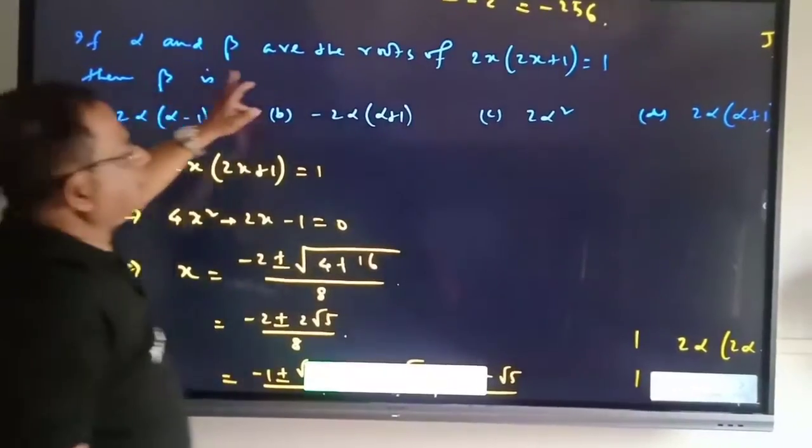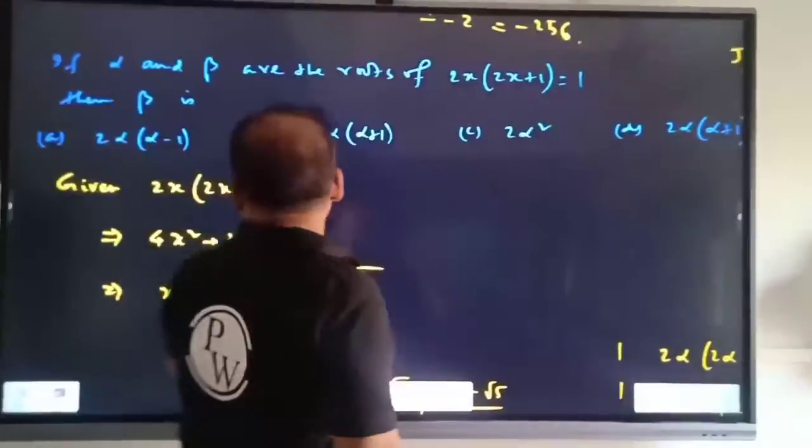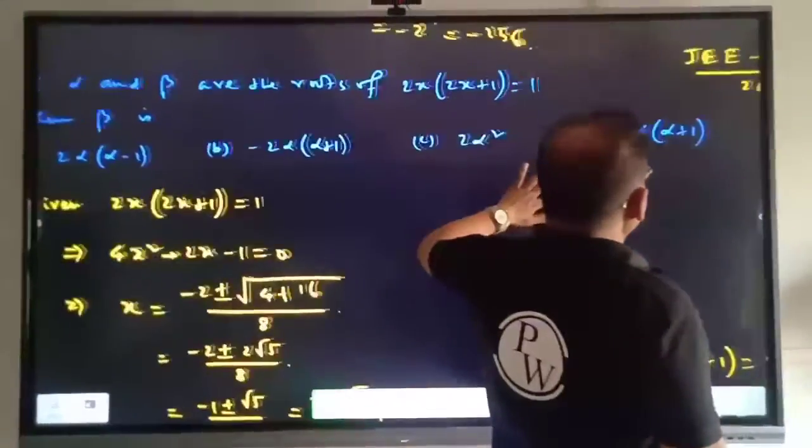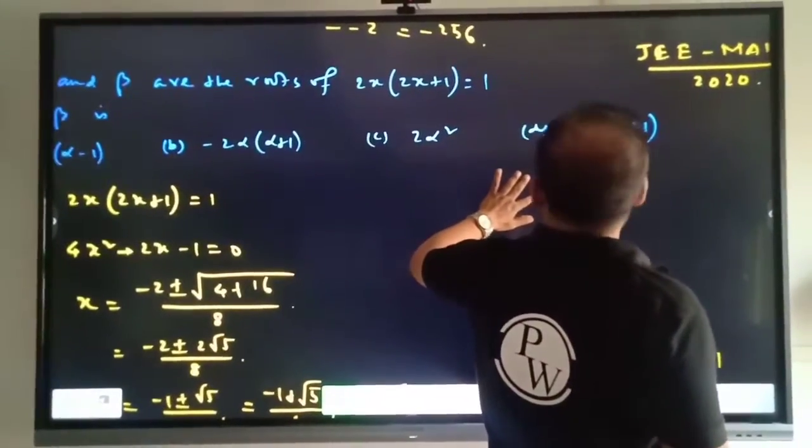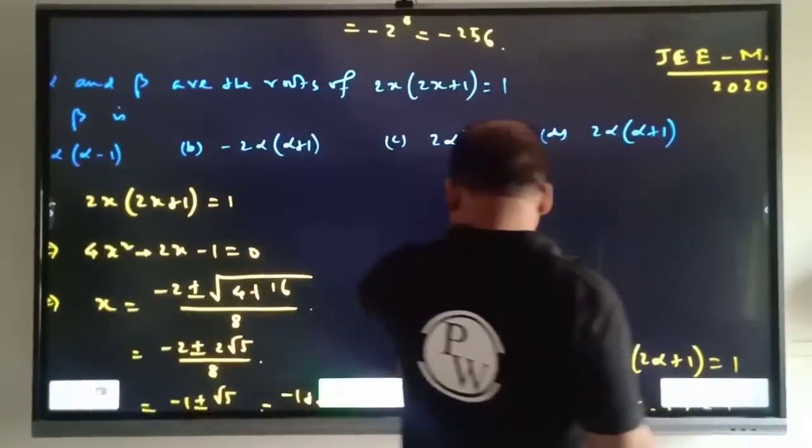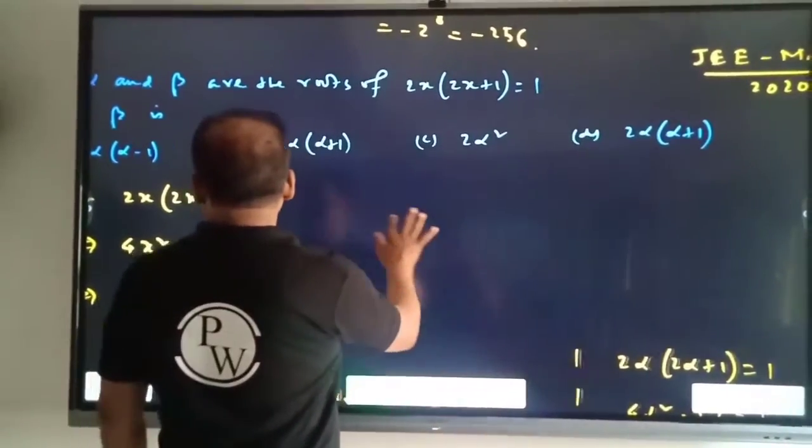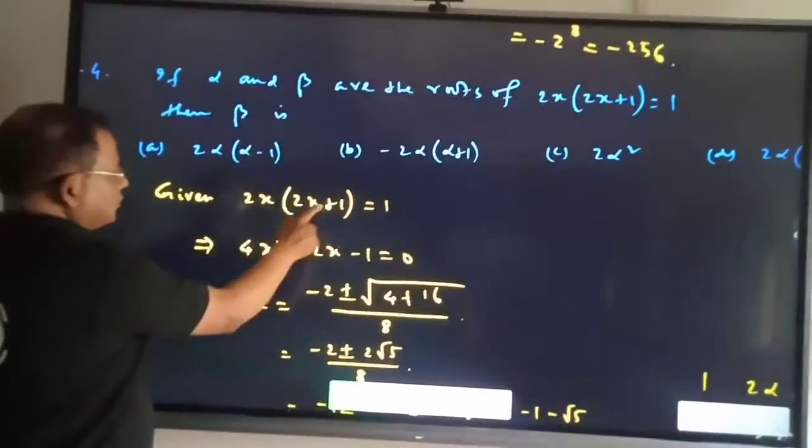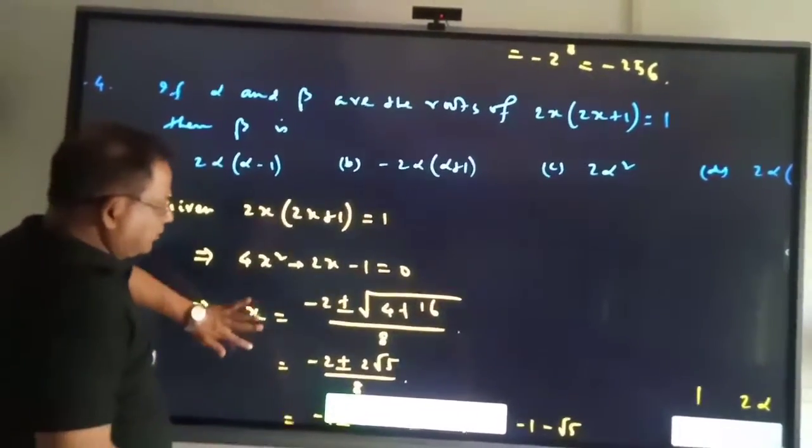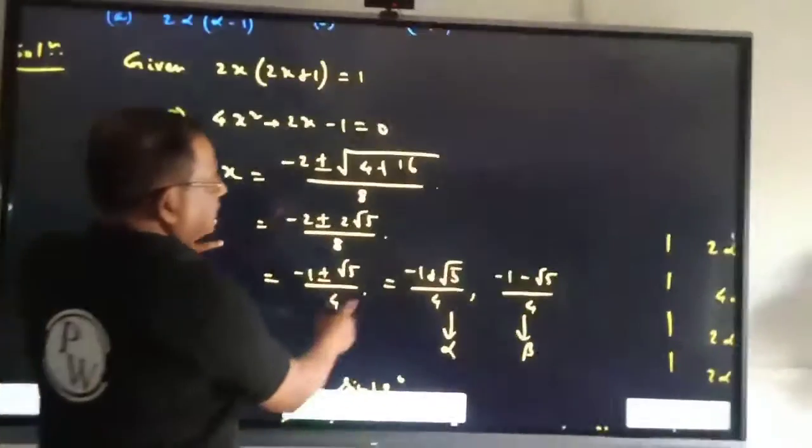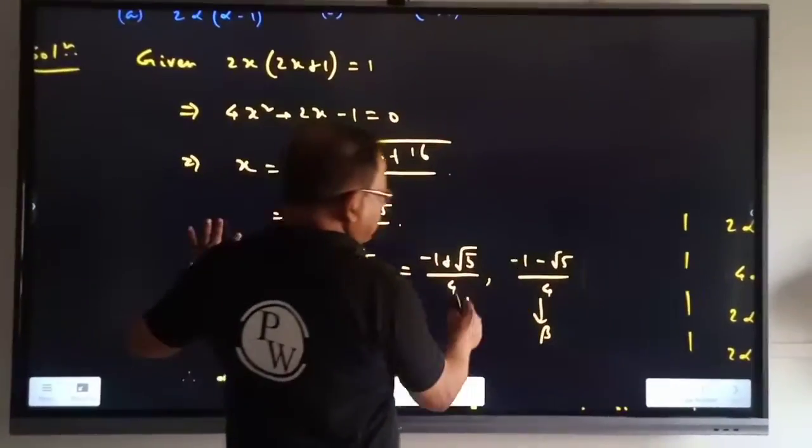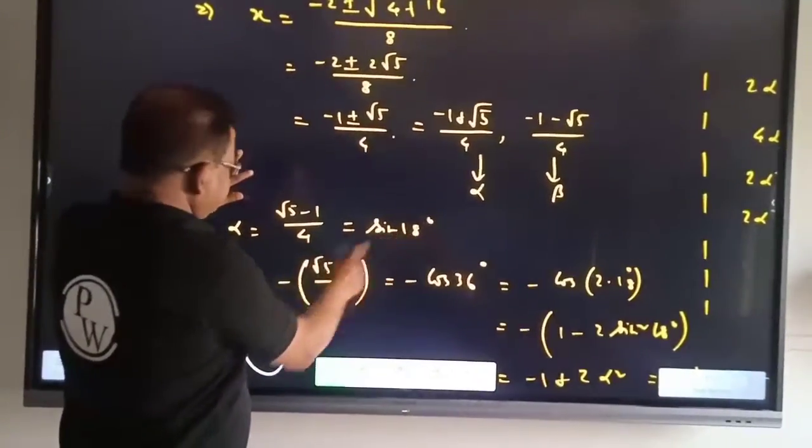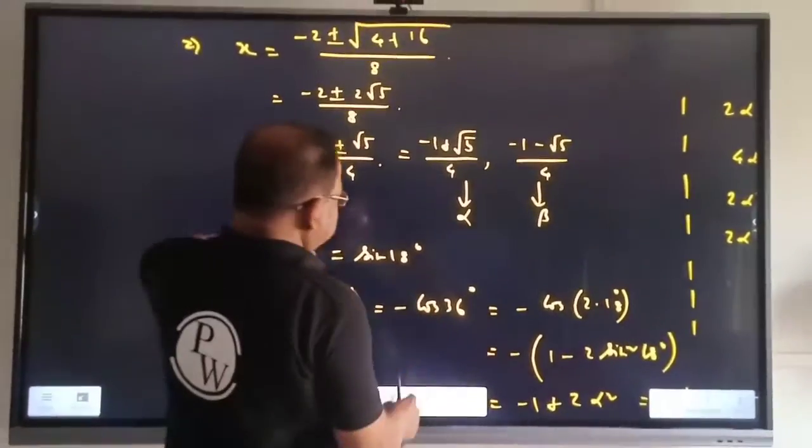If alpha and beta be two roots of this equation, then beta has 4 options. This question is from 2020. Simply solve: x equals this, so alpha equals sin 18 degrees and beta equals minus cos 36 degrees.